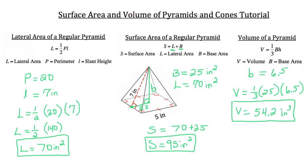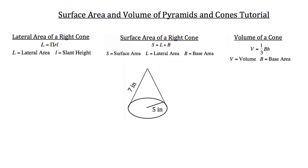Now let's move on to calculating the lateral area, surface area, and volume of a cone. The lateral area of a right cone equals pi times the radius times the slant height — where the slant height goes from the top vertex down to the side of the cone. The lateral area covers all the area around the cone but not the circular base. Adding the base area gives you the surface area. To find the volume, multiply one-third times the area of the base times the height.